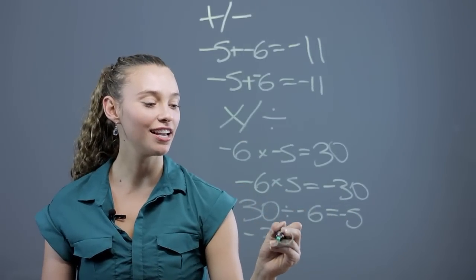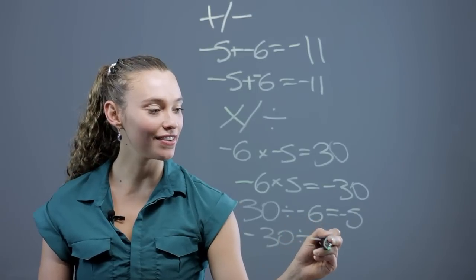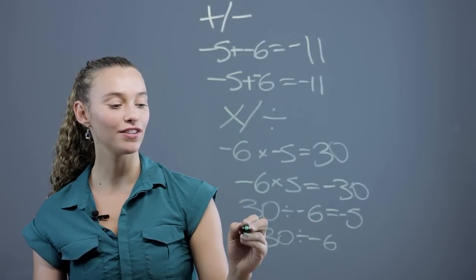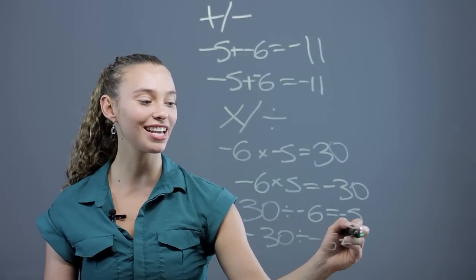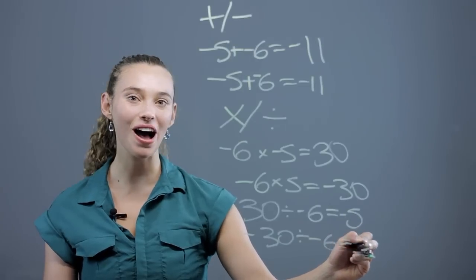But negative 30 divided by negative 6, we have two negatives, we're going to get a positive, positive 5.